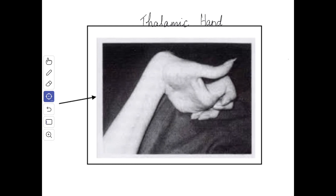There may be emotional instability with spontaneous laughing and crying. Next we'll see the thalamic hand, which is sometimes seen in thalamic lesions. The opposite hand is held in an abnormal posture: the forearm is pronated, the wrist is flexed, the metacarpophalangeal joints are flexed, and the interphalangeal joints are extended. The fingers can be moved but slowly due to the altered muscle tone in the different muscle groups.